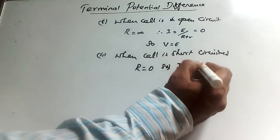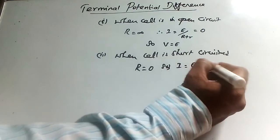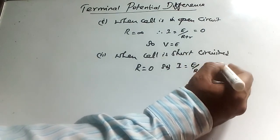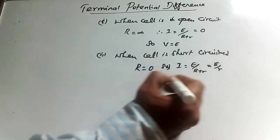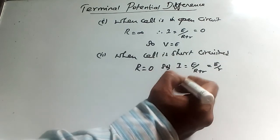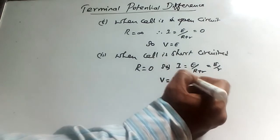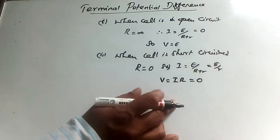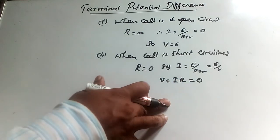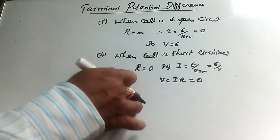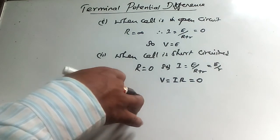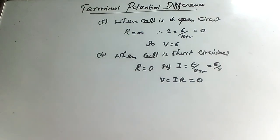So I equals E divided by R plus r. Here R equals zero, that's why E divided by r only. And V equals I times R. Since R equals zero, terminal voltage is also zero. So in short circuit, current from cell is maximum and terminal voltage difference is zero.